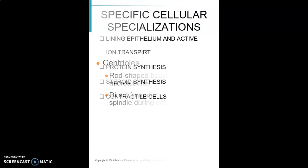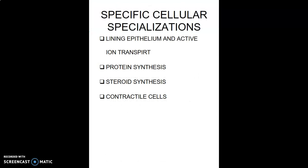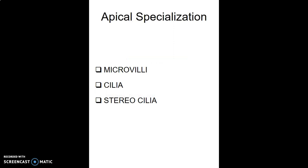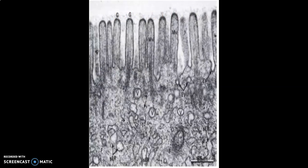There are specific cellular specializations: lining epithelium has apical, lateral, and basal specialization. Apical specialization includes microvilli — as in the ileum and duodenum — cilia — as in the respiratory tract and trachea — and stereocilia — as in the inner ear and epididymis. Here you can appreciate the apices of the cell with microvilli in both light microscopy and electron microscopy.